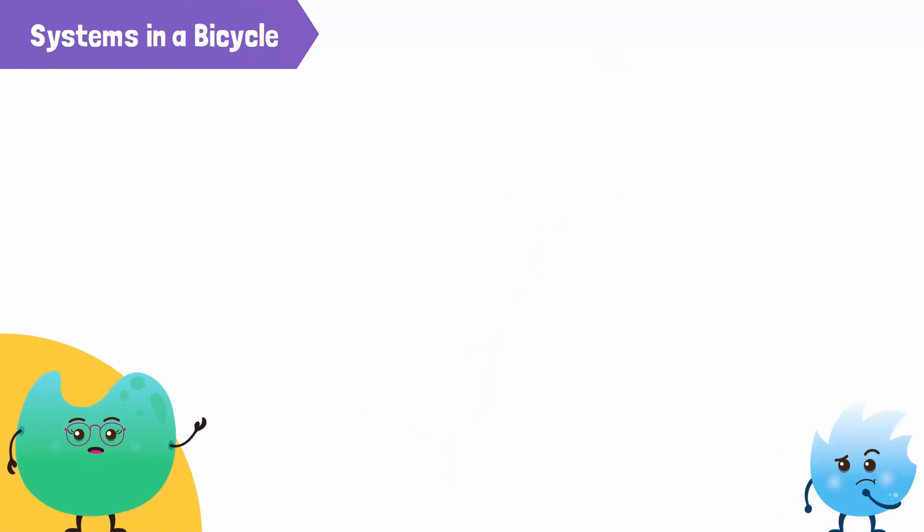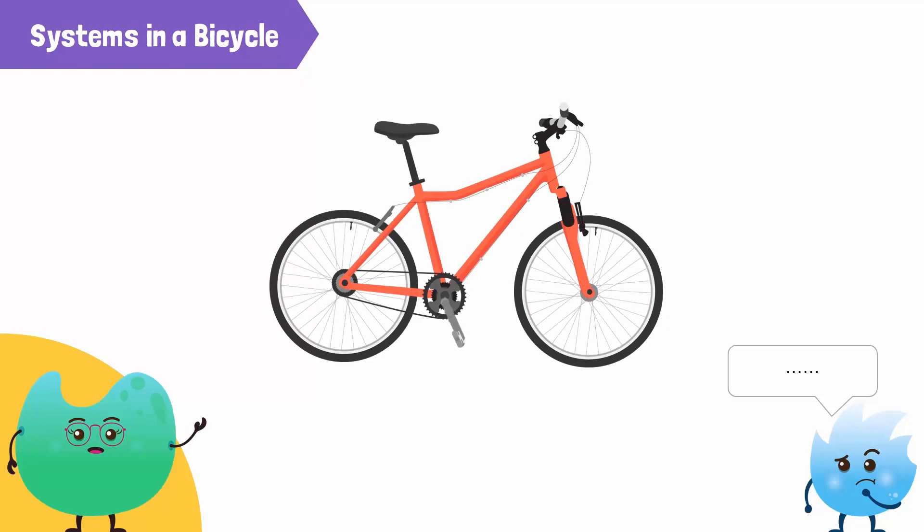What other things around you use a combination of simple machines? Have you ever wondered how your bicycle moves? Of course, with the wheels, but how does the system help to speed up your bicycle?